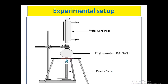Here is the experimental setup. In this round bottom flask we are taking ethyl benzoate and 10% NaOH and just heating it. A water condenser is attached to it.